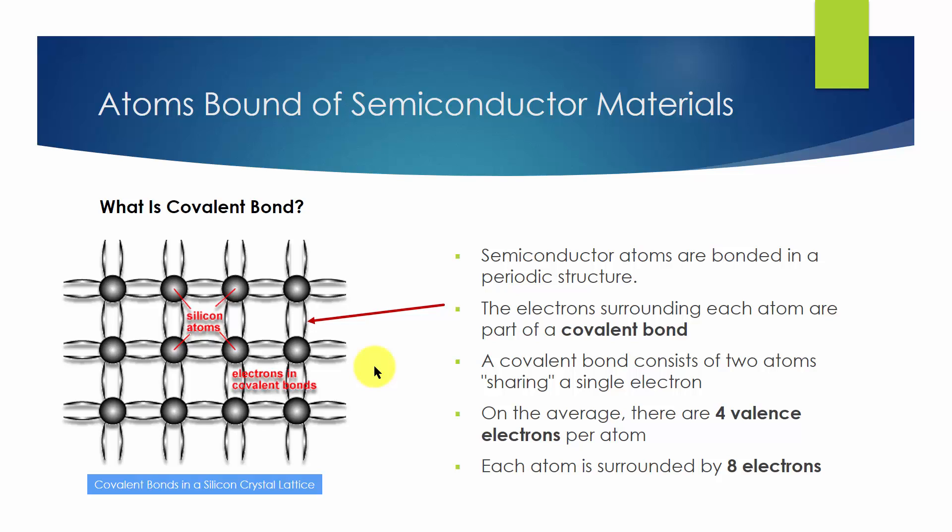At room temperature, a semiconductor has enough free electrons to allow it to conduct current, while at close to absolute zero temperature, a semiconductor behaves like an insulator.